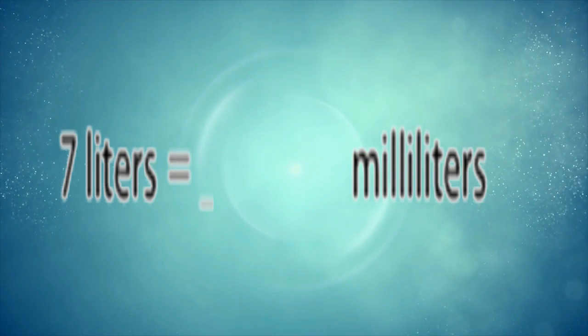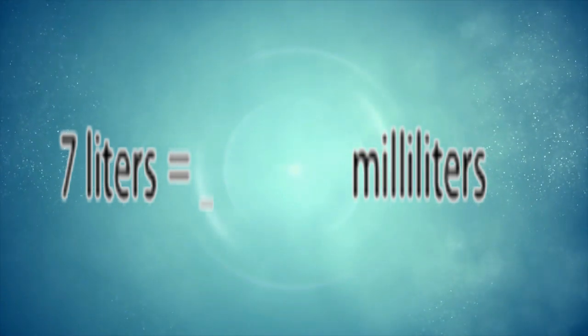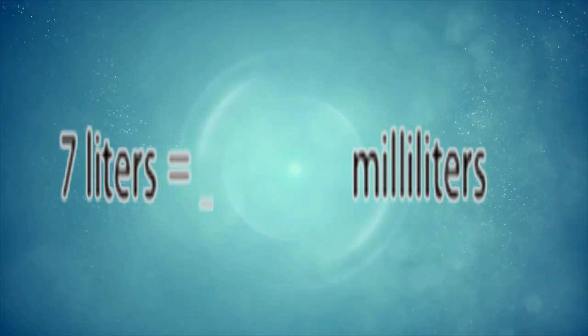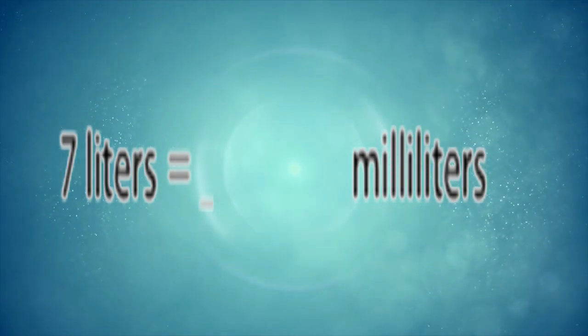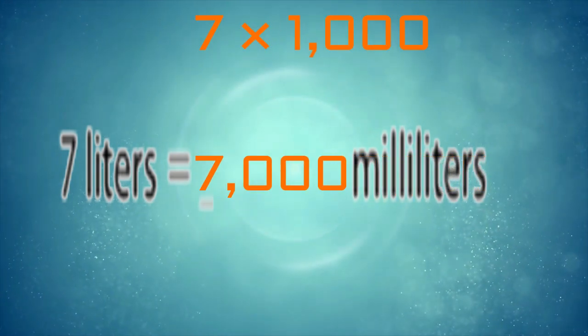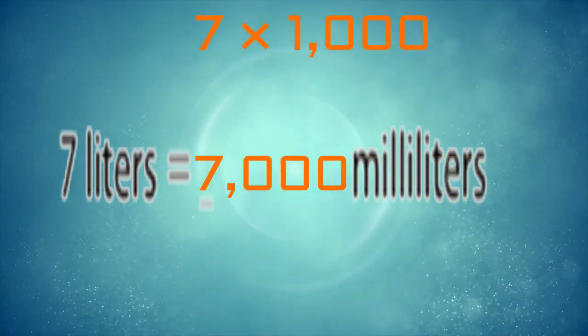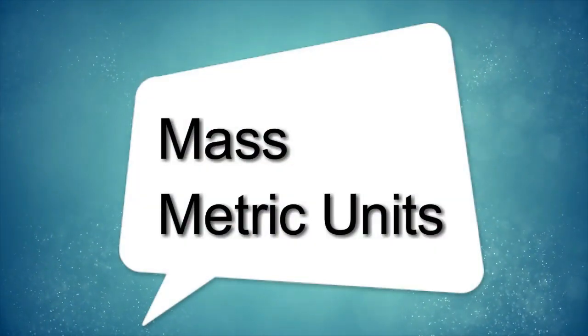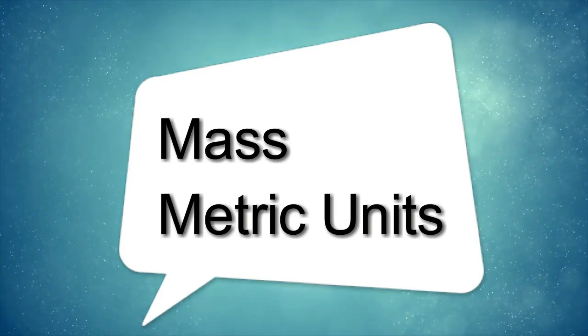In this example we have 7 liters equals how many milliliters. As you know, in each liter we have 1000 milliliters, so we're going to multiply 7 by 1000. Seven times 1000 equals 7000 milliliters. Let's move to the next part of our lesson.